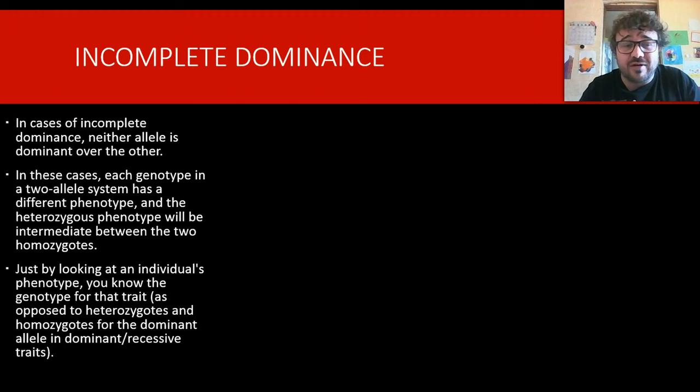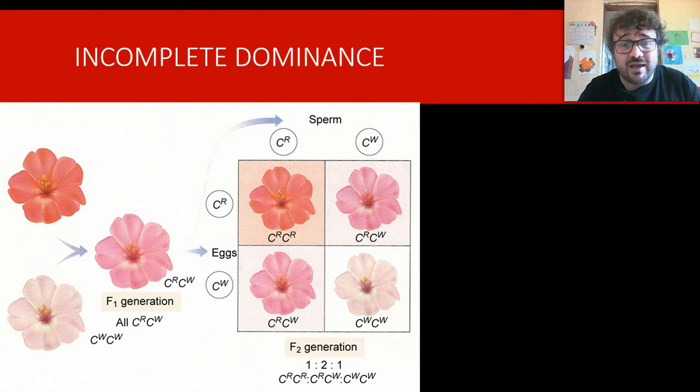That's a very good example. So, when we look at an individual for something which is simple inheritance, we can't tell if it's expressing the dominant characteristic. We can't tell straightaway just by looking at it whether or not it is homozygous dominant or heterozygous. We can tell if it's homozygous recessive, but we can't tell if it's homozygous or heterozygous for the dominance. With incomplete dominance, we can.